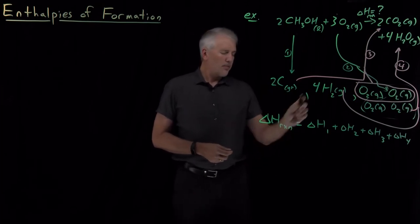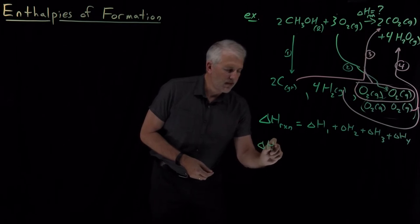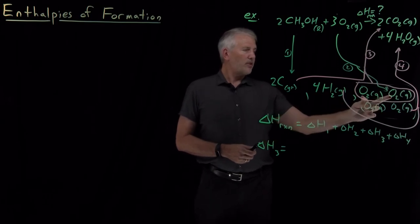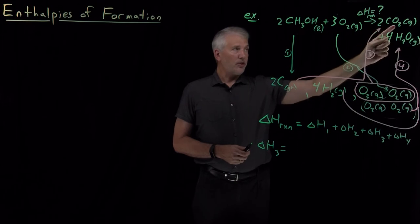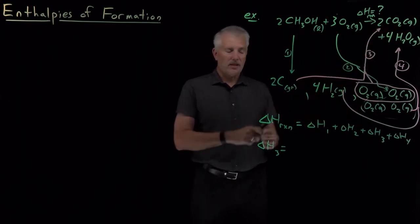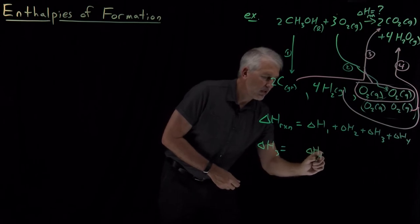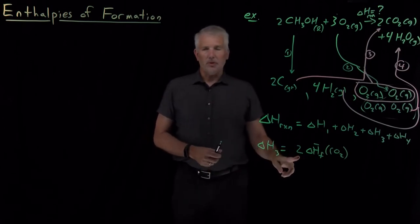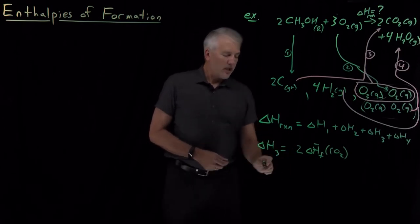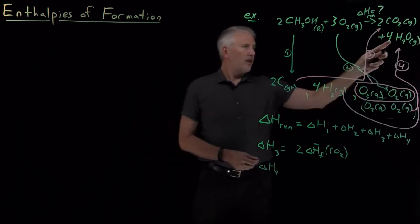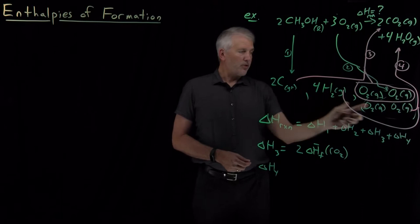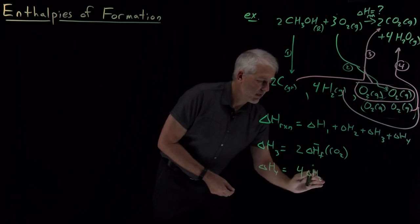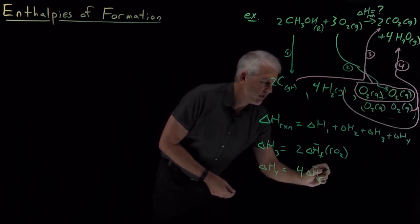Let's start with step number three: combining two graphites and two oxygen molecules to form two CO2s. I'm forming two molecules of CO2 out of elements in their standard states — by definition, that's twice the heat of formation of CO2. Likewise for step number four: forming four molecules of water out of H2 and O2 in their standard states. So step number four is four times the enthalpy of formation of H2O.